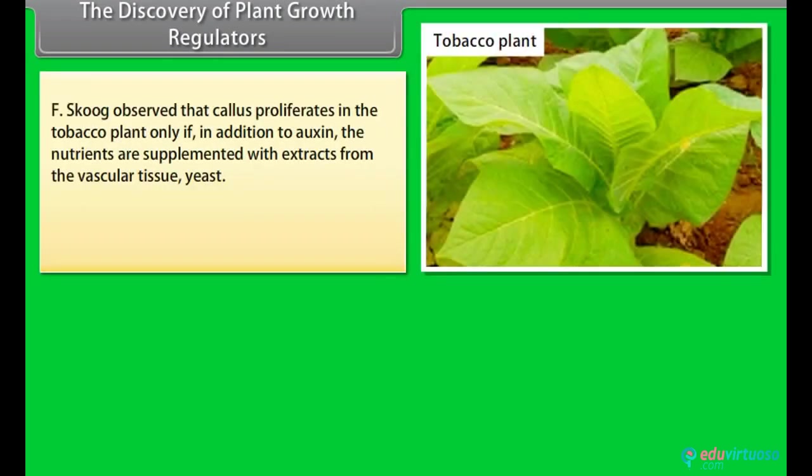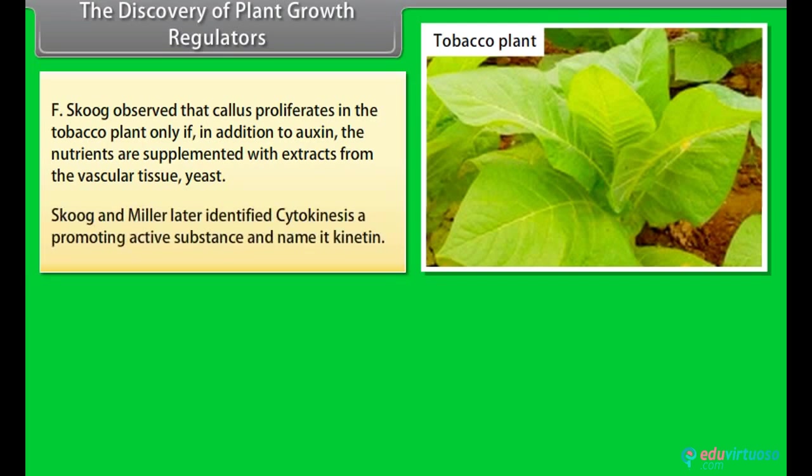The discovery of plant growth regulators. F. Skoog observed that callus proliferates in the tobacco plant only if in addition to auxin, the nutrients are supplemented with extracts from the vascular tissue, yeast. Skoog and Miller later identified kinetin, a cell-promoting active substance and named it kinetin.